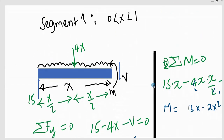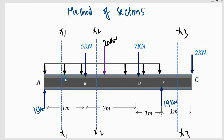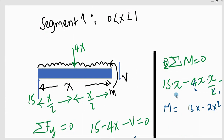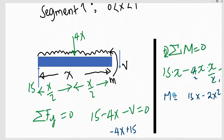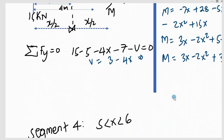Considering segments — segment 1, 2, 3 — you have to put a section at every discontinuity, starting from A going forward. Before you reach the 5 kN load, you need a segment there. Then after the 5 kN going to the 7 kN, you need a segment there. Then after the 7 kN going to C and looking at B where the support is, you need a segment there. So there will be three sections, and you apply equilibrium conditions to each segment.